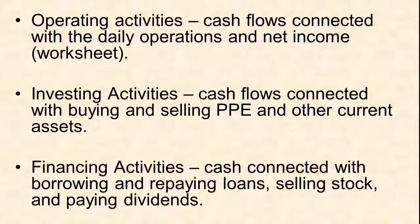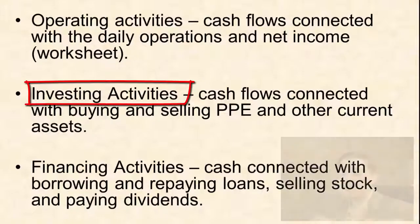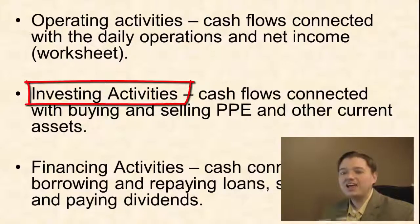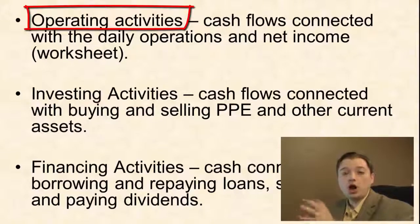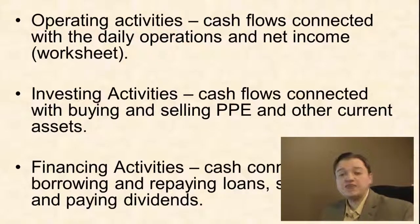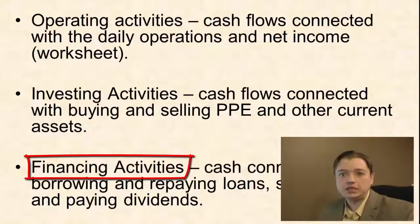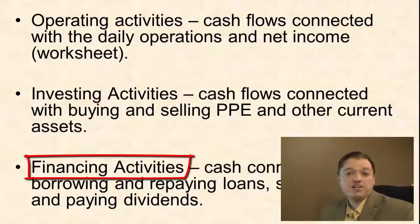The other two are dividend revenue — cash received from dividends — and interest revenue — cash received from interest. Those come from long-term investments, so you'd think they go in the investing section, but for the same reason, they get put up in operating as well. So all interest and dividend revenue goes up in operating. Dividends we pay out stay down in financing, because there is no expense for dividends — it's not an expense — so it can stay in financing like we'd expect.